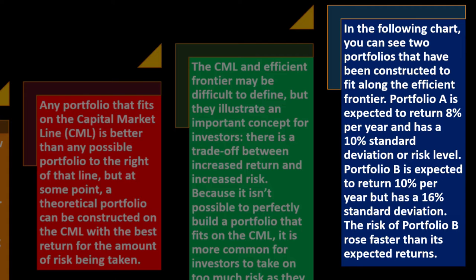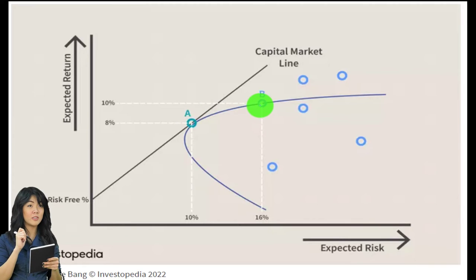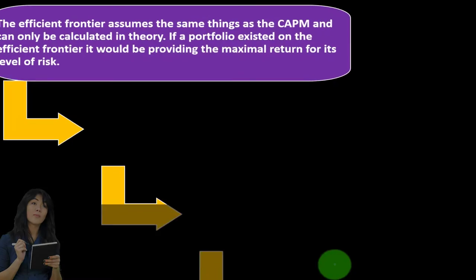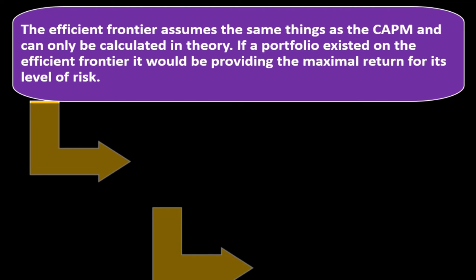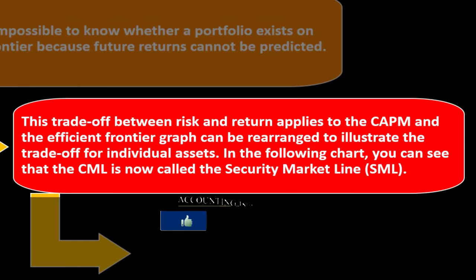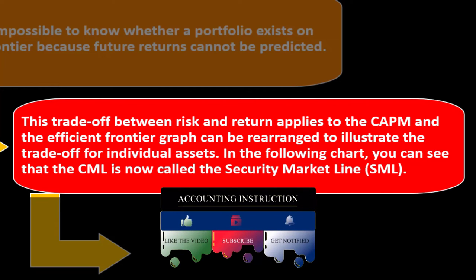Portfolio B's risk rose faster than its expected return — as we move out on the curve, the expected return increases by a smaller portion while risk increases by much more. The efficient frontier assumes, as does the CAPM, that it can only be calculated in theory. If a portfolio exists on the efficient frontier, it provides the maximal return for its level of risk. However, it is impossible to know whether a portfolio exists on the efficient frontier because future returns cannot be predicted. This trade-off between risk and return applies to the CAPM.